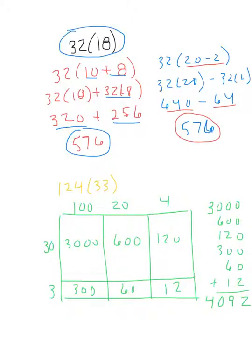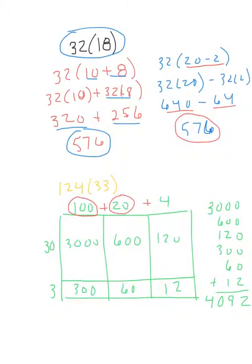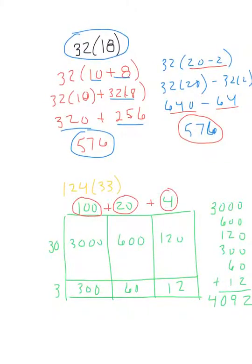So if I took 124, well, that's the same as 100 plus 20 plus 4. Again, 33. So 30 plus 3. And then I say, well, 30 hundreds is 3,000. 30 20s is 600. 30 4s is 120. 3 100s is 300. 3 20s is 60. 3 4s is 12. So when I add all these up, I'm left with 4,092. What I also like about area model is that it allows you to use some algebraic thinking.